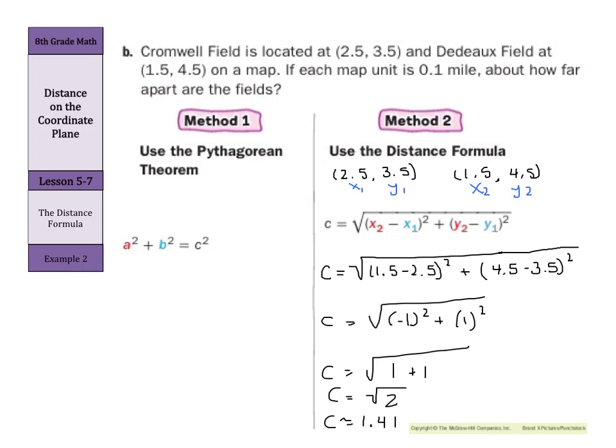Now, if each map unit is 1 tenth of a mile, we're going to take this 1.41 multiplied by 0.1, and we're going to get about 0.141 miles. And that's our answer.